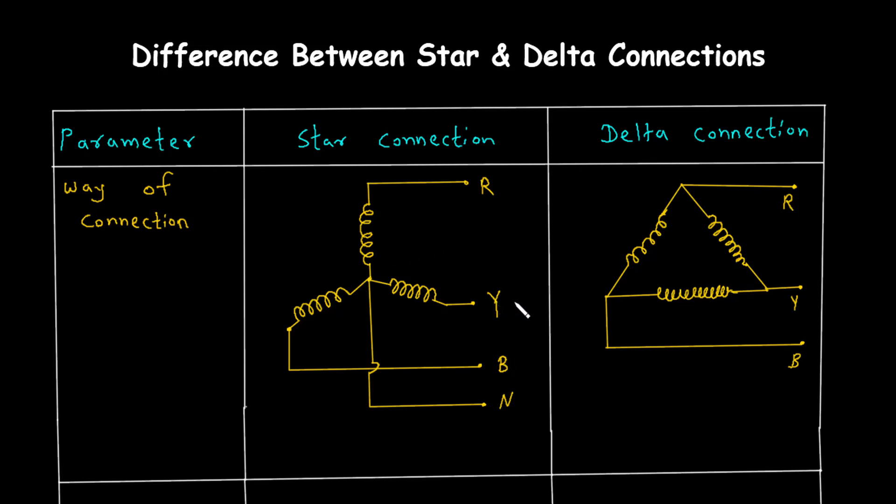In a star connection, one end of each of these windings is connected to a common point. This common point is called the neutral point, often marked as N. The other ends of the windings are connected to the three-phase power supply lines.